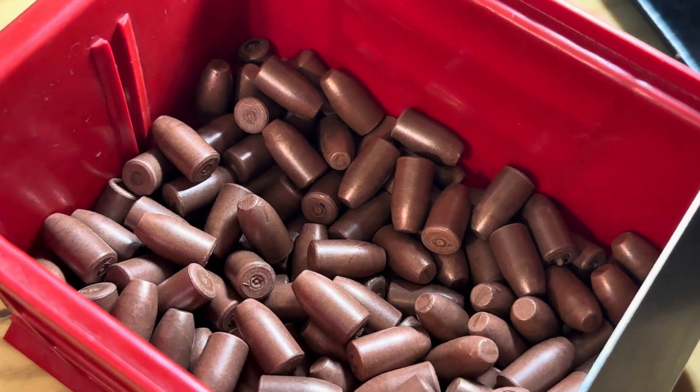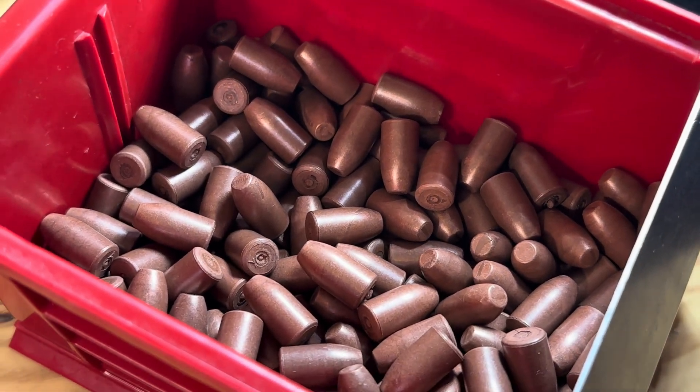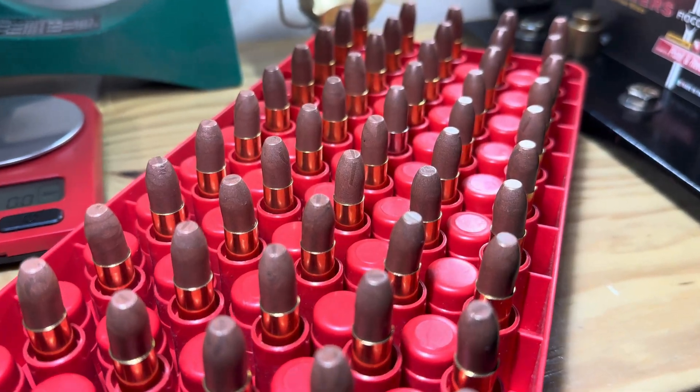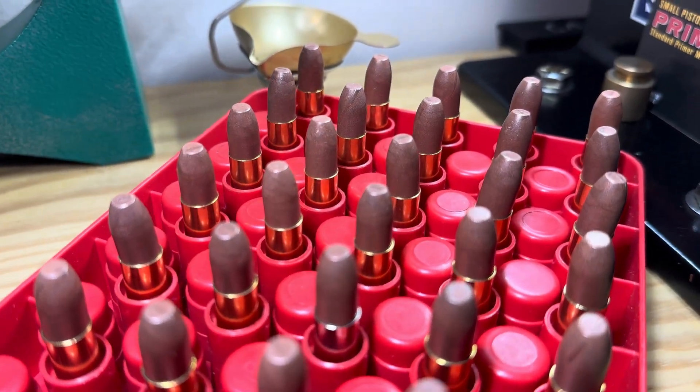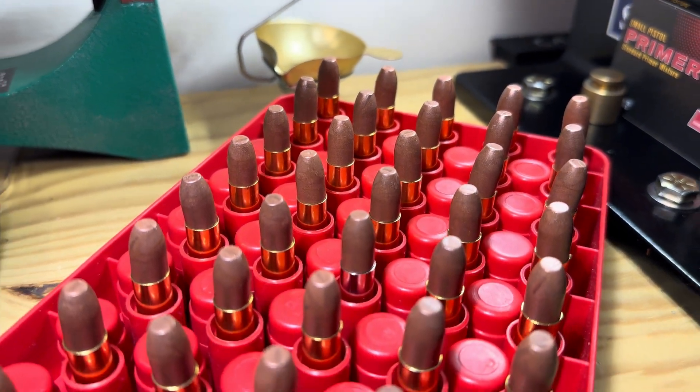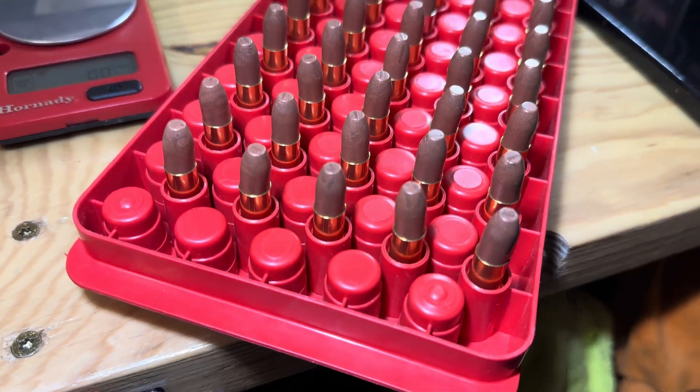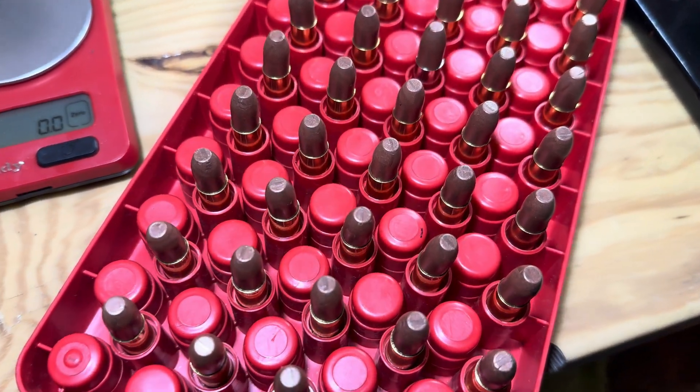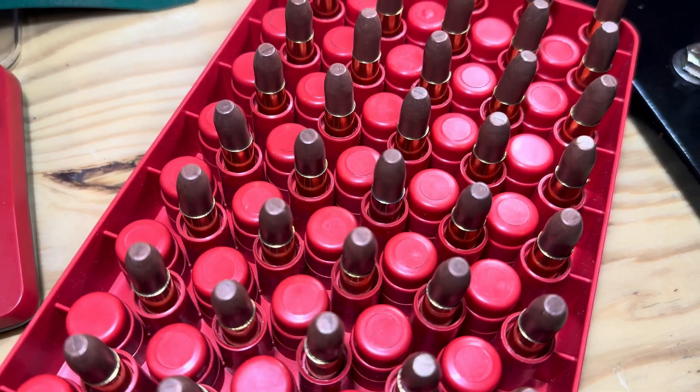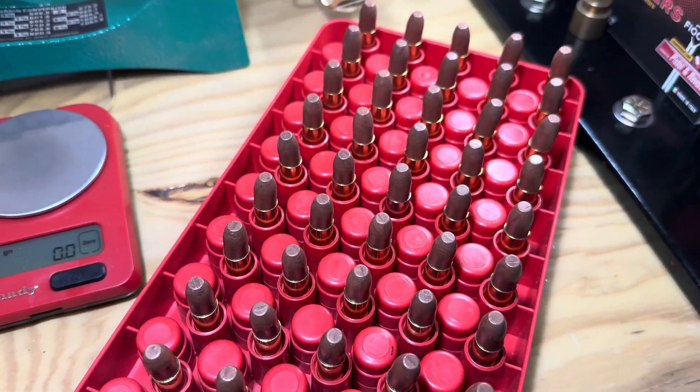Guys, the new 94 grain Norma frangible projectiles offered over at Raven Rock's Precision. A couple of nuanced techniques that go into loading these guys, including making sure you're getting proper neck tension, because typically these are .353 diameter, but more on that in today's video.